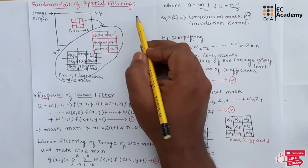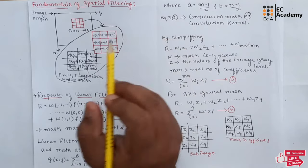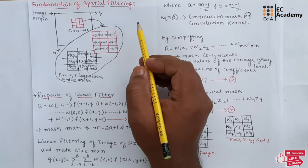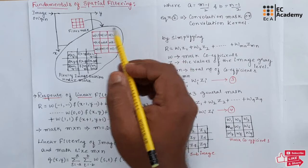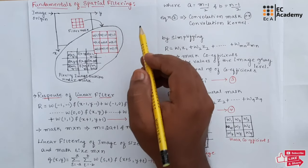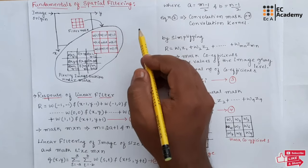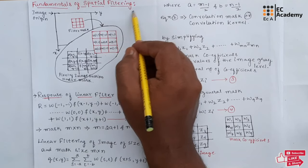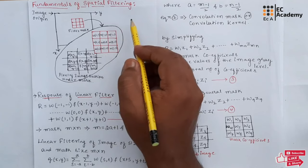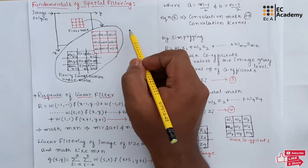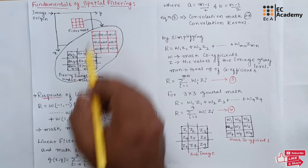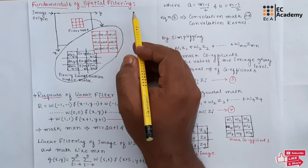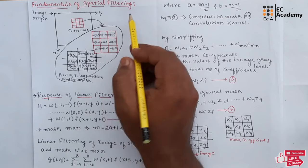The filter that passes lower frequencies we call a low pass filter. The overall effect produced by a low pass filter is to blur or smooth an image. We can accomplish similar smoothing directly on the image itself by using spatial filters. These spatial filters are also known as spatial mask, kernel, templates, or window. They offer considerably more versatility compared to the frequency domain because they can also be used for non-linear filtering operations.